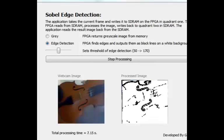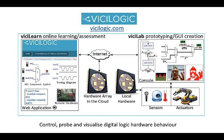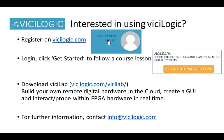ViciLab supports Python-based GUI application development. This example illustrates webcam image capture, execution of a Sobel edge detection algorithm in the FPGA, and display of the result by the Python application. If you are interested in using ViciLogic, register on ViciLogic.com, click Get Started to follow a ViciLearn course lesson, download ViciLab to build your own remote digital hardware in the cloud and create a graphical user interface to interact and probe within the FPGA hardware in real time. For further information, contact info at ViciLogic.com.